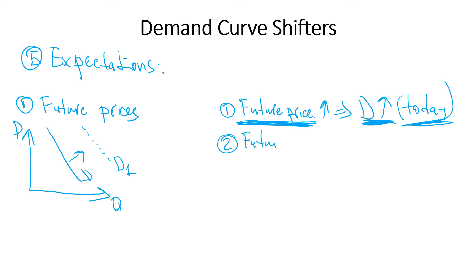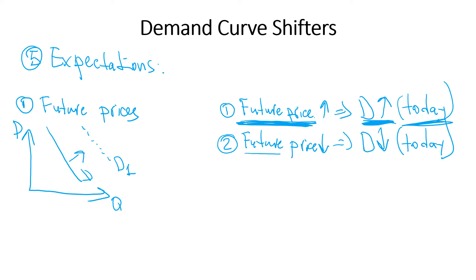The second scenario: the future price is going to decrease. Remember, we take just one isolated event. If you know the price of bicycles is going to decrease in the future, people will hold off right now to take advantage of that lower price. So today, demand is going to decrease — people are going to wait. That becomes Demand 2.